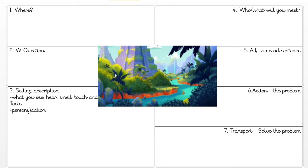We're going to look at the river. We're going to do one, two, and three. So we're going to think of where the river is, a W question, and then also the setting description. This is a big section here for us to write as much information as we would like. You're going to think about your senses - what you see, hear, smell, touch, and taste - and we're asking you for a personification sentence.